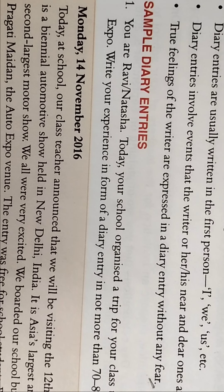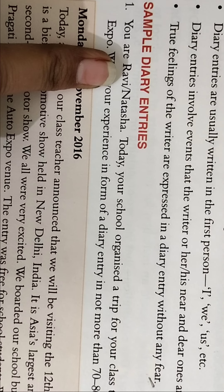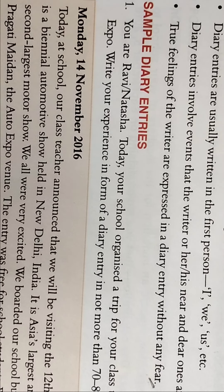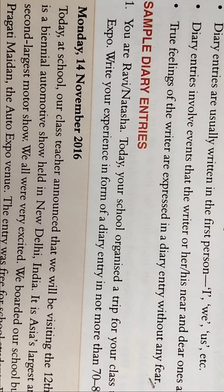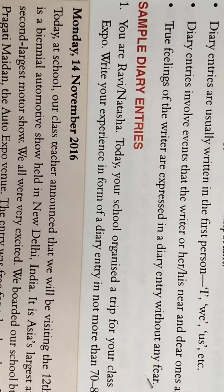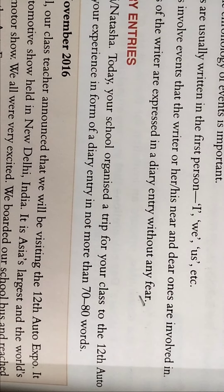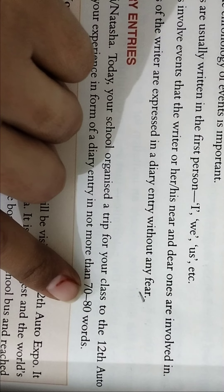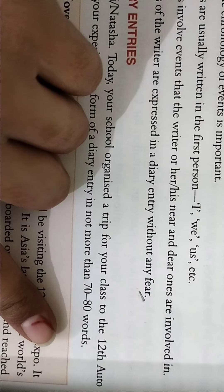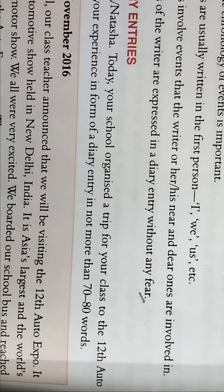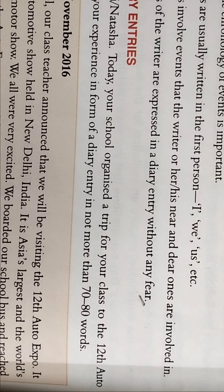This is a sample diary entry. If you are a boy, you will write your name as Ravi, and if you are a girl, you will write your name as Natasha. Today your school organized a trip for your class to the 12th Auto Expo. Write your experience in the form of a diary entry, not more than 70 to 80 words. Word limits increase as your class goes up — 80 to 100 for class 7 and 100 to 150 for class 8.